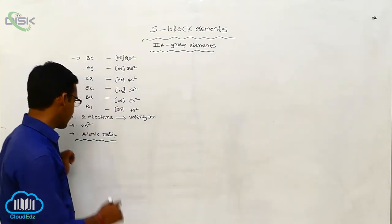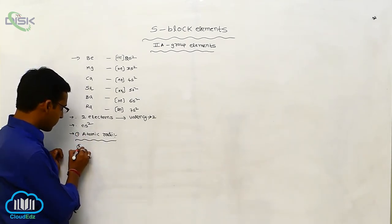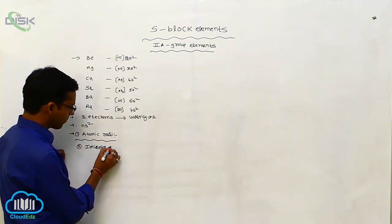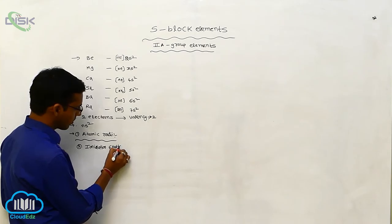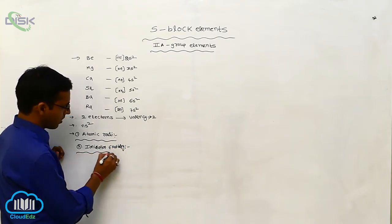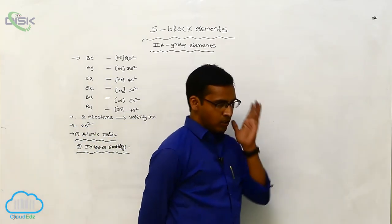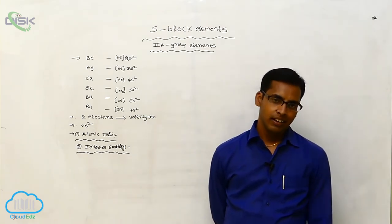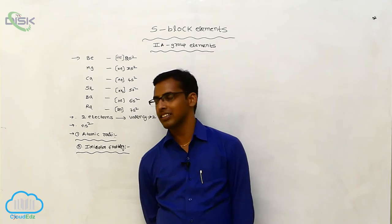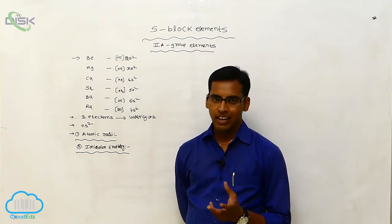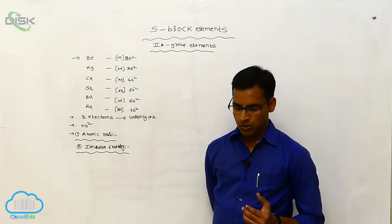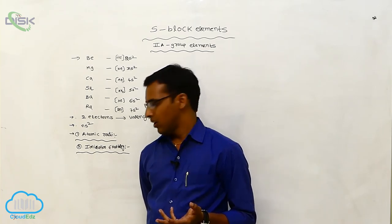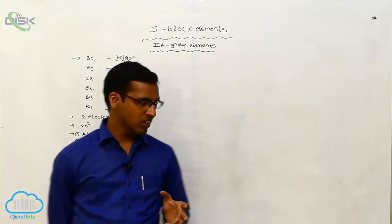The second physical property is ionization enthalpy. In secondary group elements, ionization enthalpy decreases from top to bottom because atomic size increases. Due to the increasing atomic size, ionization enthalpy values decrease. Generally beryllium has a higher ionization enthalpy with more nuclear charge.